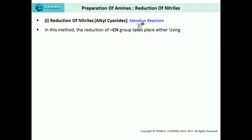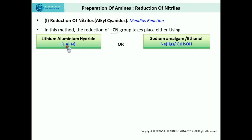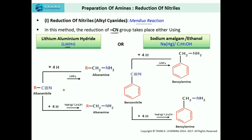In the Mendius reaction, reduction of the cyanide group takes place either using lithium aluminium hydride or sodium amalgam in the presence of ethanol. On the left hand side we have alkyl nitrile and on the right we have aromatic nitrile — specifically benzoyl nitrile. In both cases, reduction of the nitrile takes place.